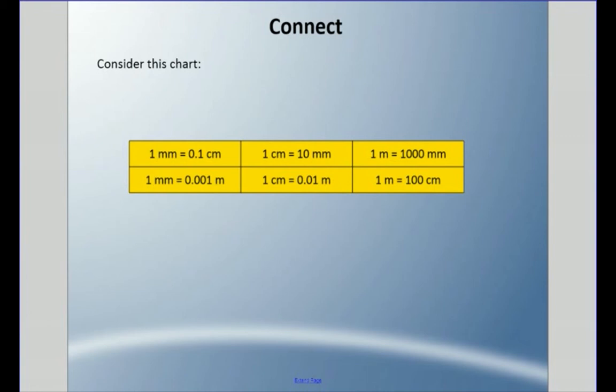Consider this chart — it's our handy reference for this video. One millimeter equals one tenth of a centimeter, so ten millimeters equals one centimeter. One meter equals one thousand millimeters. One millimeter is one thousandth of a meter. One centimeter is one hundredth of a meter. And one meter is simply one hundred centimeters.